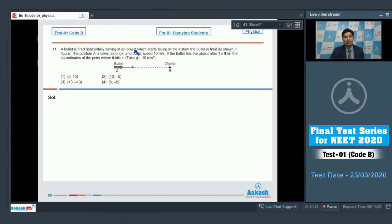In this question a bullet is fired horizontally aiming at an object which starts falling at the instant that the bullet is fired as shown in the figure. The position A is taken as origin and the bullet speed is 10 meter per second. If the bullet hits the object one second after, then the coordinates of the point where it hits is...